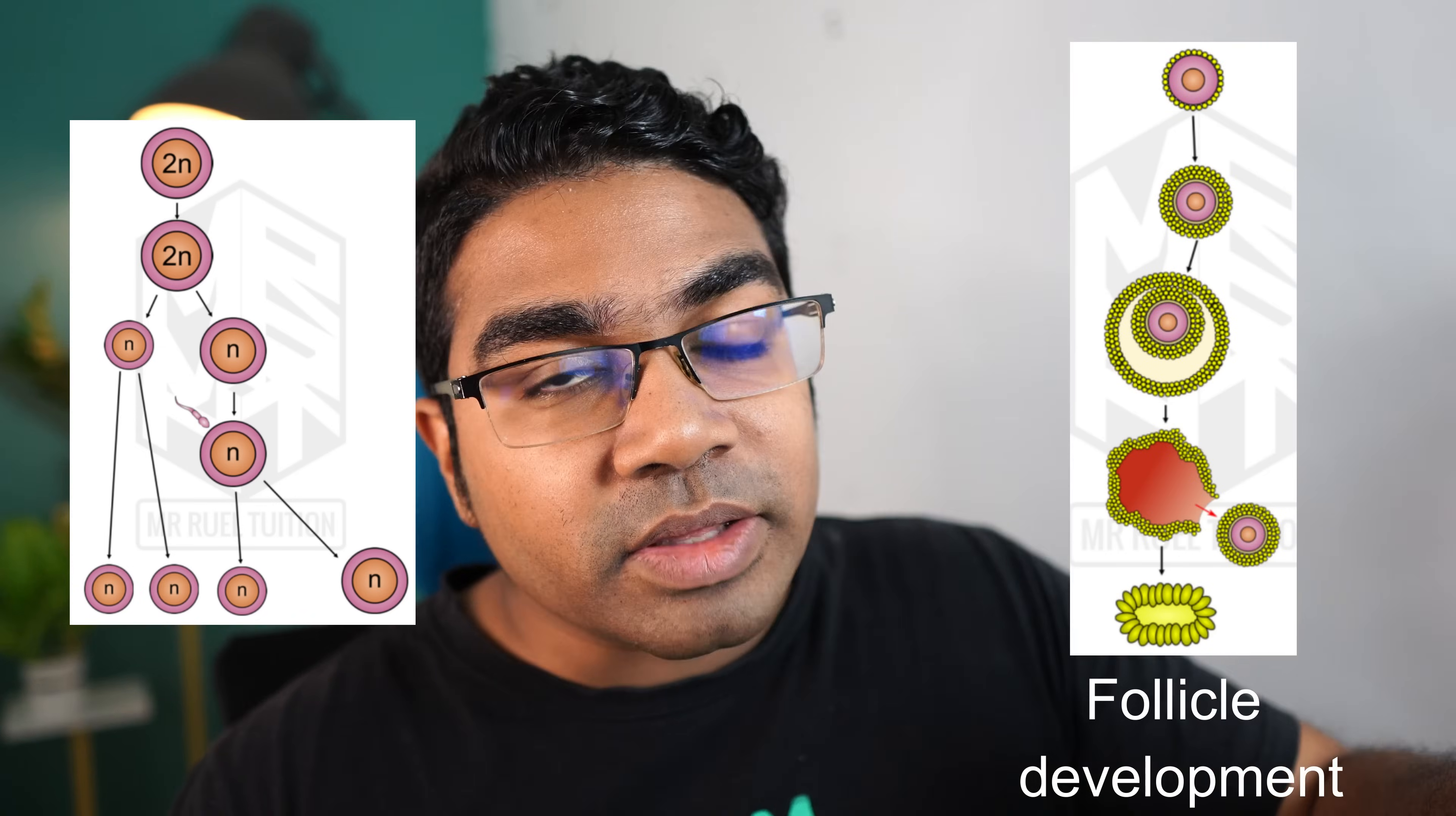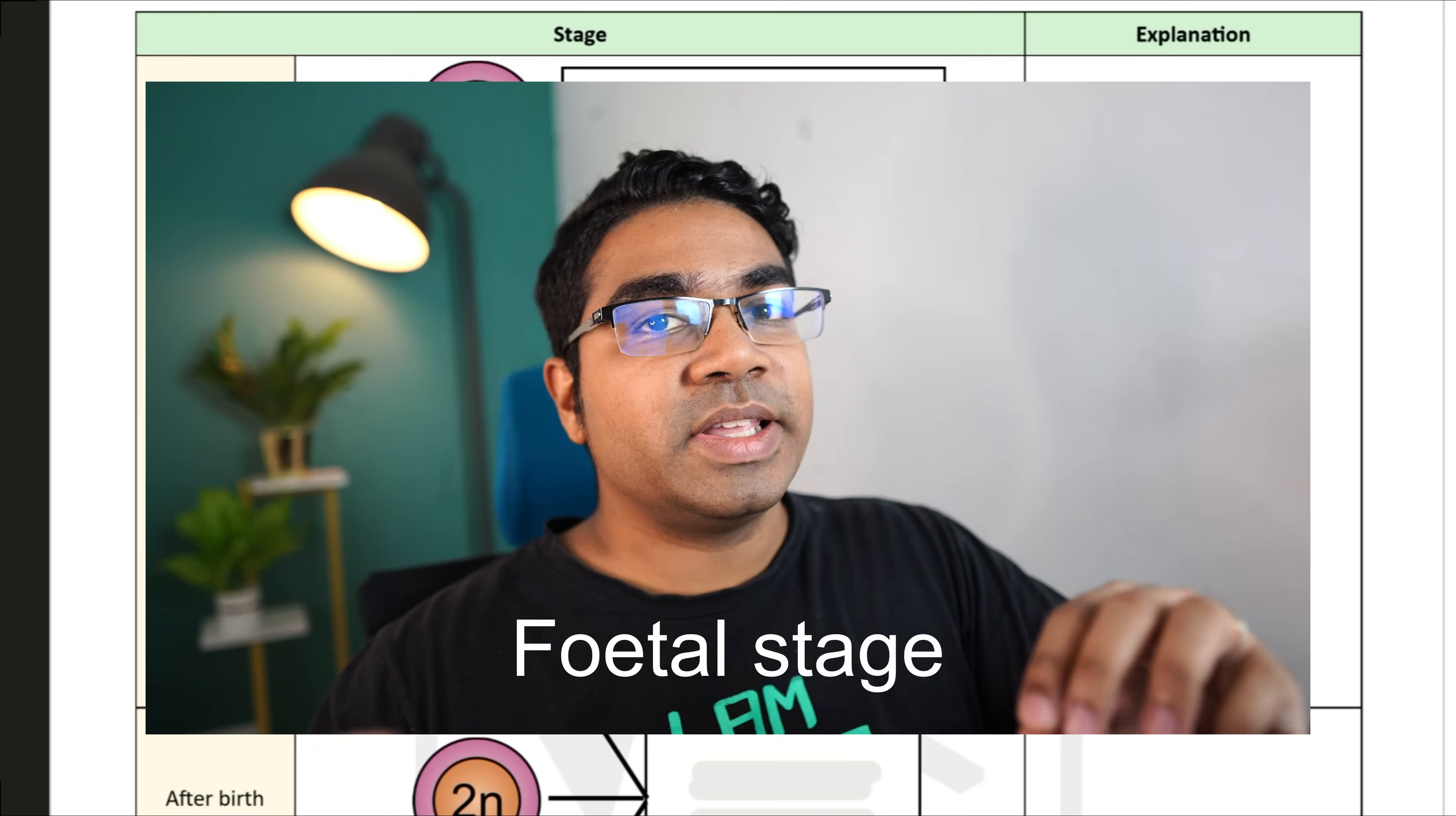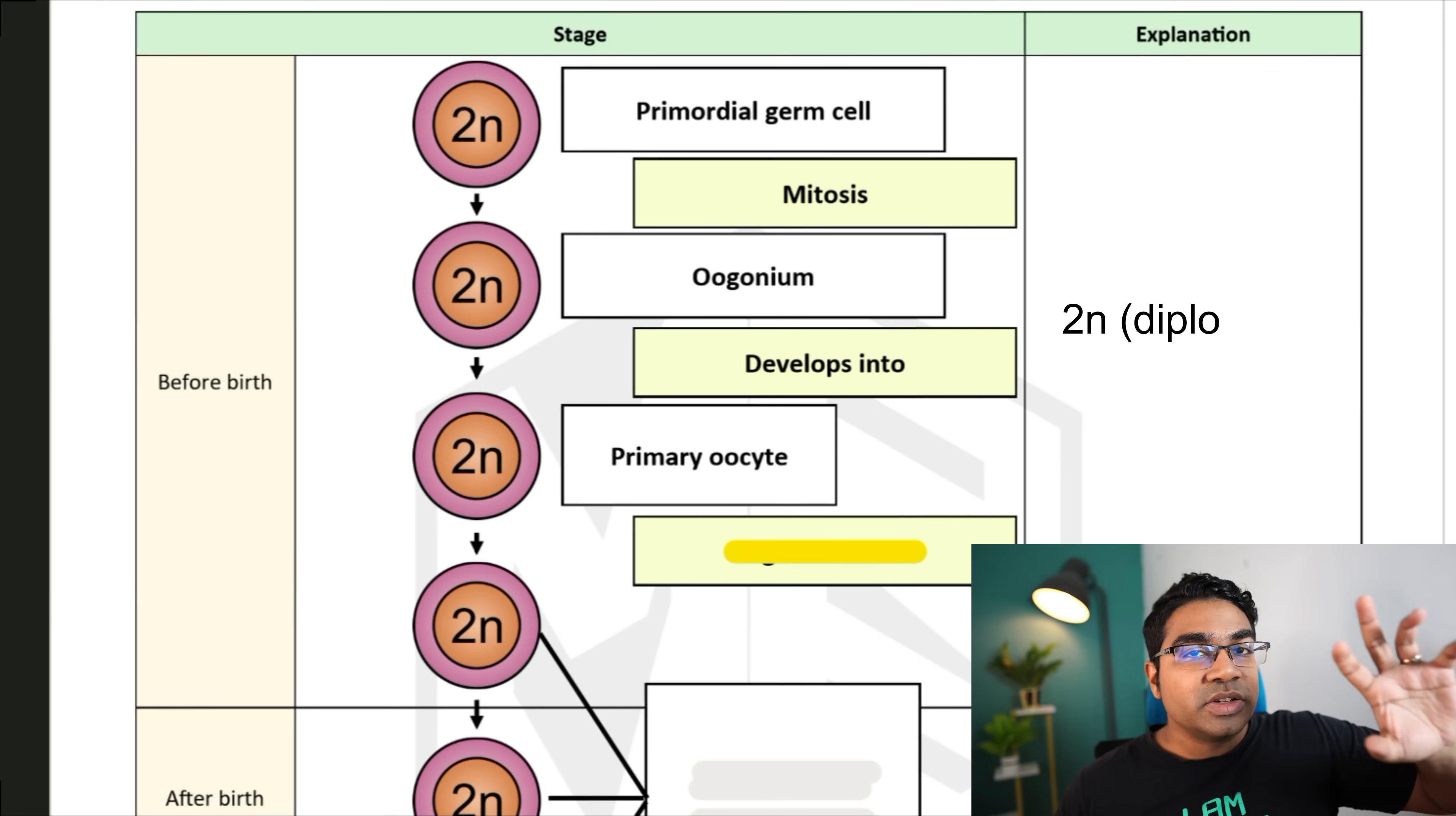Let's take a look at the meiotic event first. Oogenesis begins during the fetal stage itself. At the fetal stage, the primordial germ cell will undergo mitosis and become the oogonium. The oogonium then will develop and grow into primary oocyte.